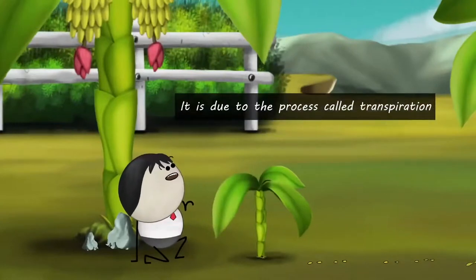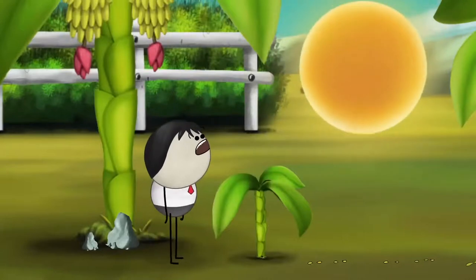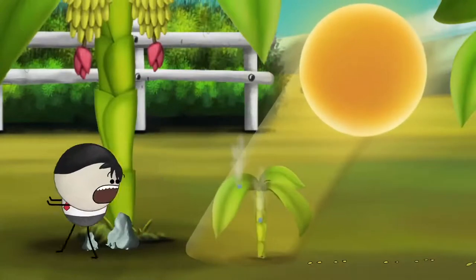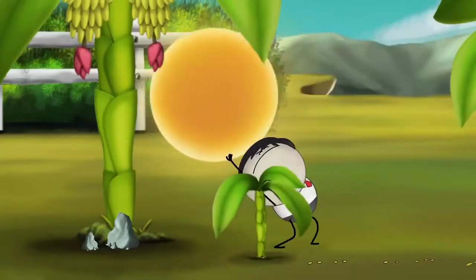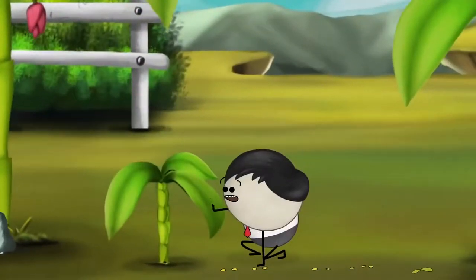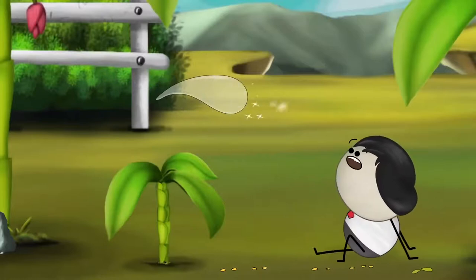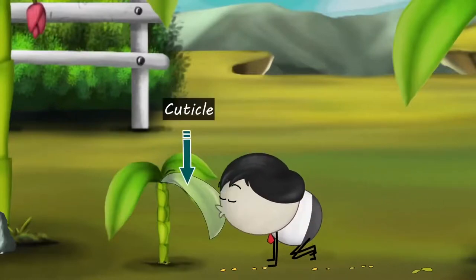It is due to the process called transpiration. Transpiration is the loss of water from leaves, stems, etc., in the form of water vapor. Now, to make sure that the plant does not lose a lot of water, the leaves are covered with a shiny, waxy coating called a cuticle.